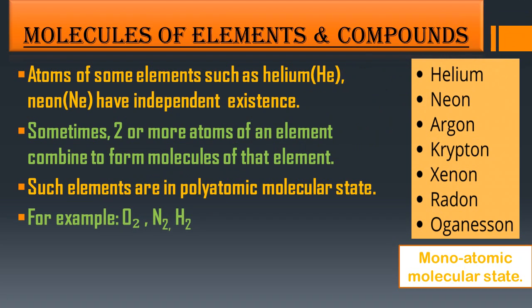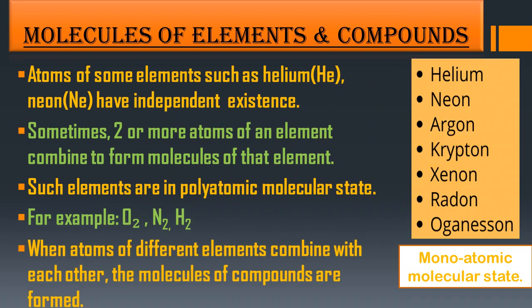For example, oxygen, nitrogen, and hydrogen are in a diatomic molecular state as O₂, N₂, and H₂ — two atoms of the same element combined to form a molecule. When atoms of different elements combine, molecules of compounds are formed. Compounds are formed by chemical attraction between different elements — for example, water, carbon dioxide, and nitrogen dioxide.